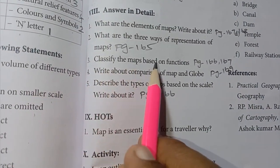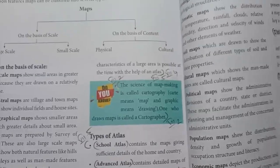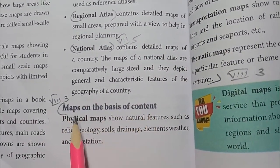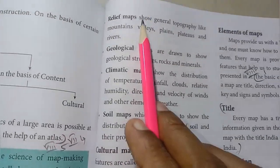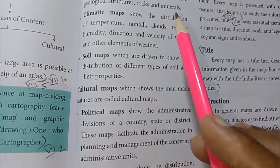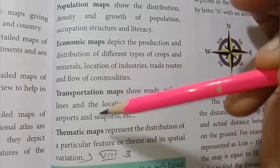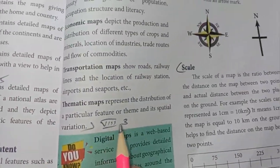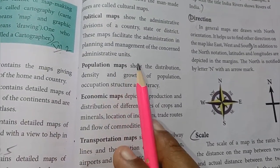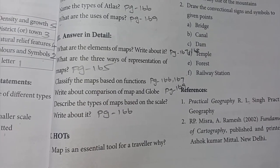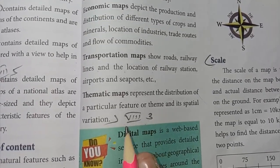3rd one: classify the maps based on functions — page number 166 and 167. Maps on the basis of content: physical map, relief map, geological maps, climate maps, soil maps, cultural maps, political maps, population maps, economic maps, transportation maps, and thematic maps.